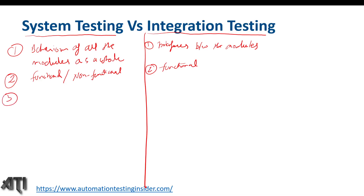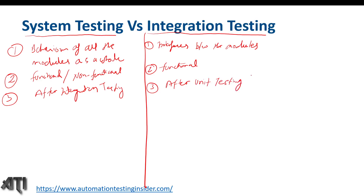The third difference: system testing is performed after integration testing, and integration testing is performed after unit testing. So the levels in software testing are: unit testing, integration testing, system testing, and acceptance testing.